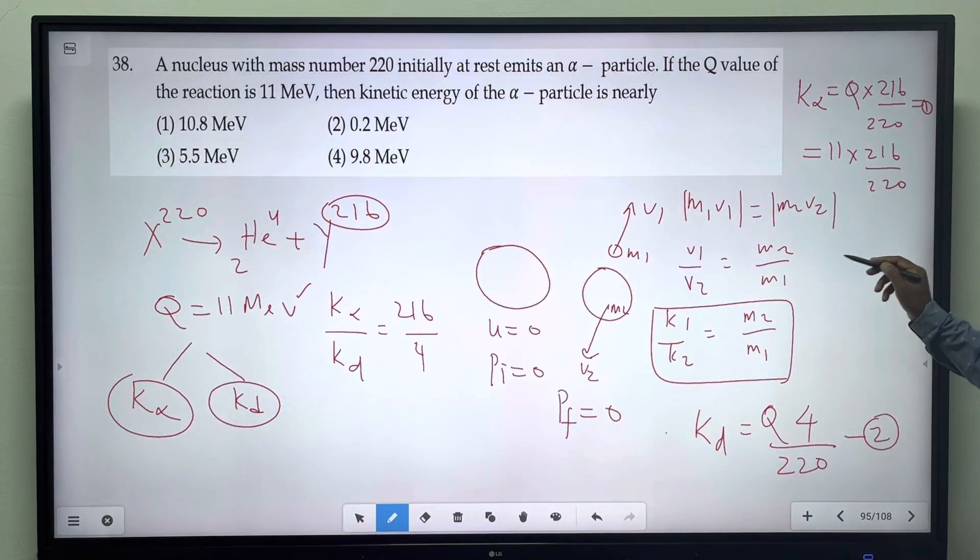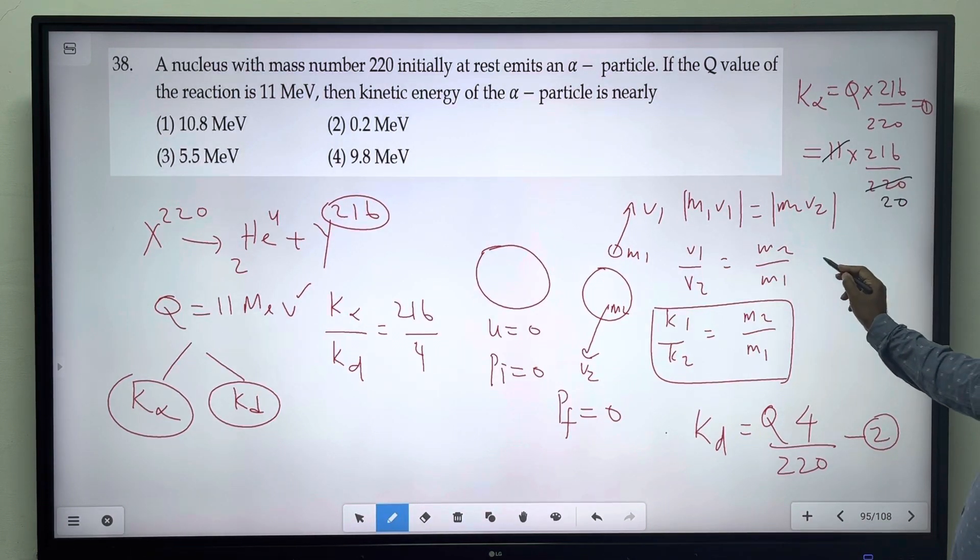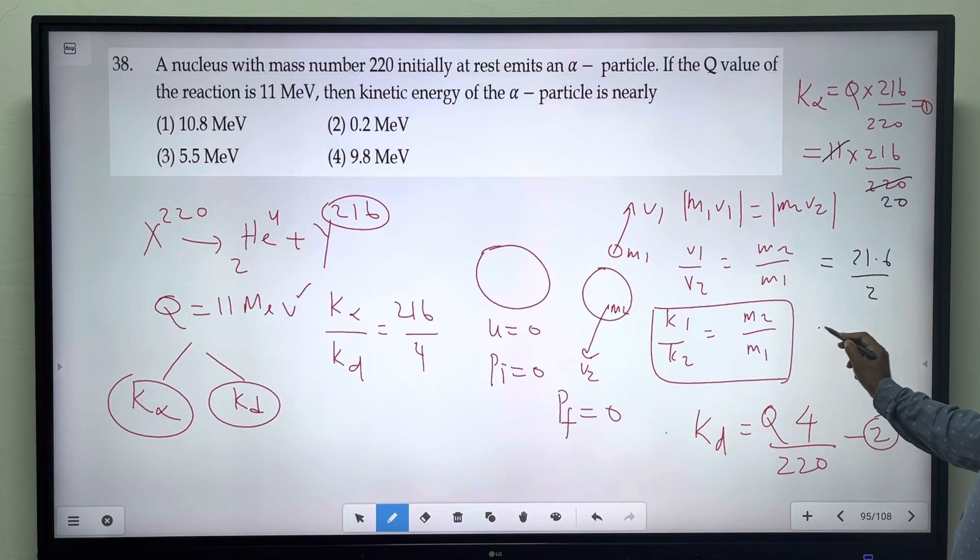11 divided by 220 is 20. So 216, 21.6 by 2, which is equal to 10.8 mega electron volt.